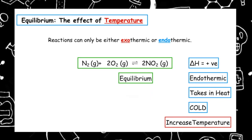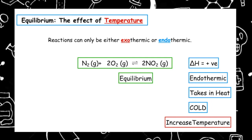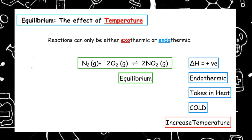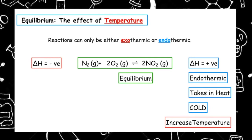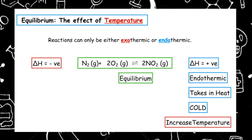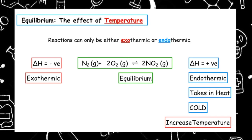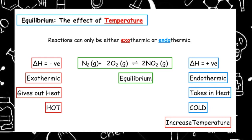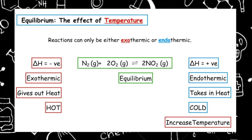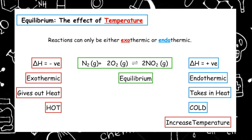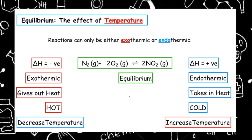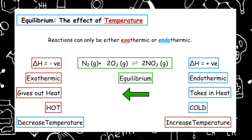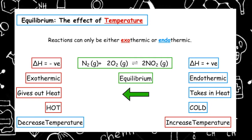However, if we wanted the reaction to go backwards to produce more reactant, we know that if the forward reaction is delta positive, the backwards reaction must be delta negative. Delta negative means an exothermic reaction, which gives out heat energy — that type of reaction is hot. So what we would want to do is decrease the temperature, which pushes the position of equilibrium to the left, making more of our reactants.